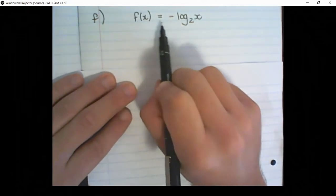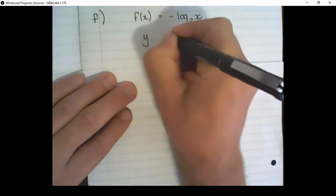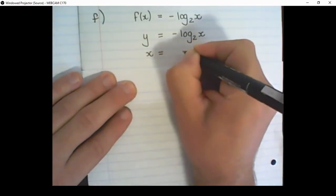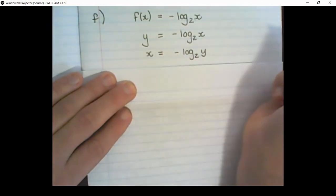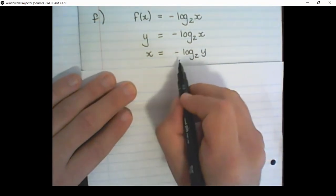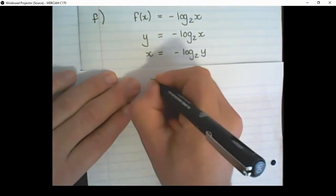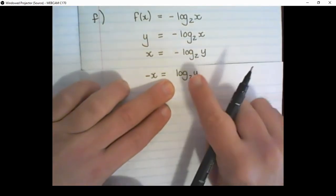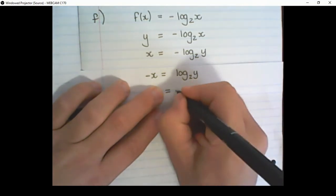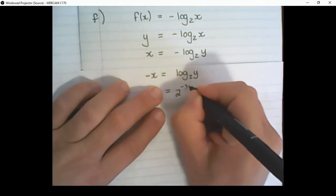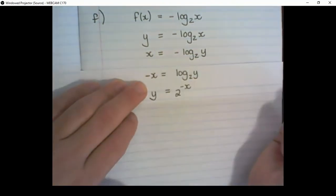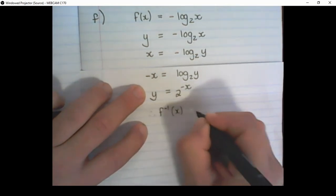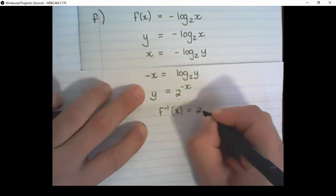In our last example, we have f(x) as negative log base 2 of x. So I replace f(x) with y, then swap x and y's position. Now before I can solve the log, I want to get rid of that negative, so that becomes negative x equals log base 2 of y. Now the base of the log becomes the base of the exponent, the exponent itself becomes negative x, and y is now standing alone. Then the inverse function equals 2 to the power of negative x.